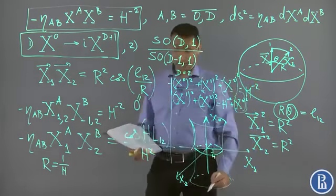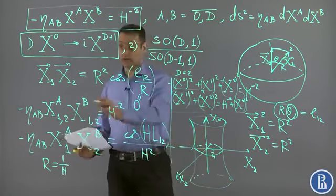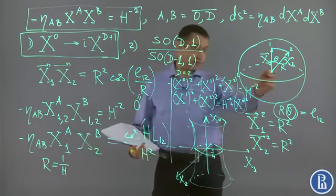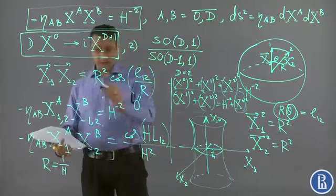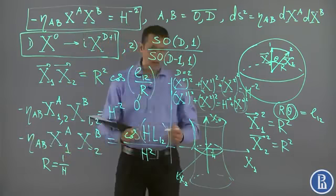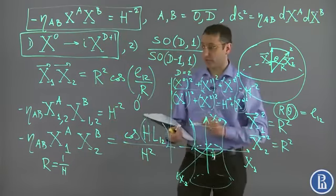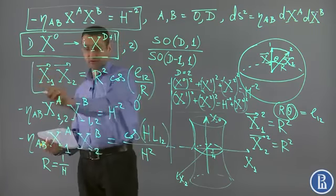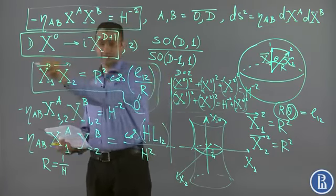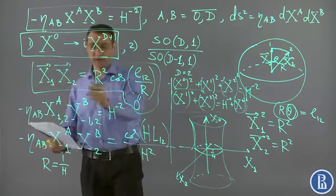Under Wick rotation, this hyperboloid is mapped to the sphere, and we can relate geodesic distance to the hyperbolic distance using this formula. This is a spherical distance, probably it's better to call it spherical distance.